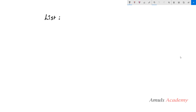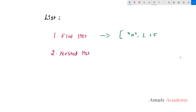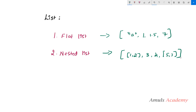We can write the list in two different ways: one is the flat list, or single list, and another way is the nested list — list within the list. A flat list can contain integers, floats, or strings, and does not contain any list within it. A nested list contains a list within the list.